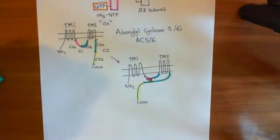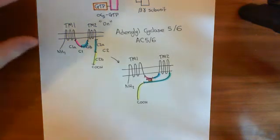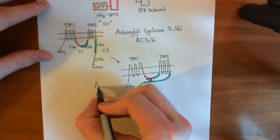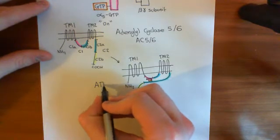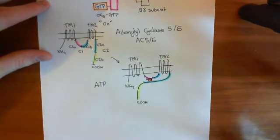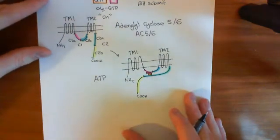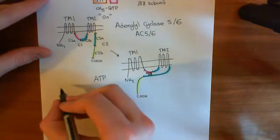Now, once this adenylyl cyclase 5 or adenylyl cyclase 6 enzyme is active, what it's going to do is it's going to start taking in adenosine triphosphate, and it's going to start converting it to cyclic AMP. So let's try and understand what this reaction actually involves.